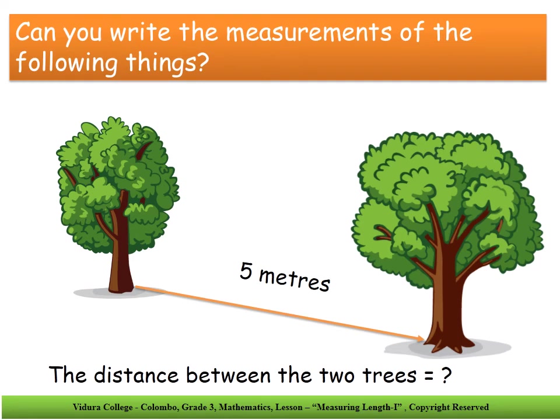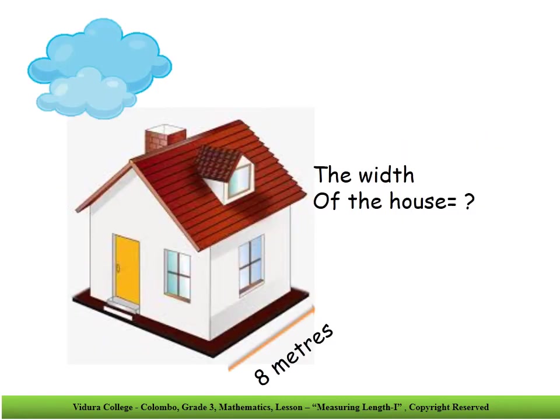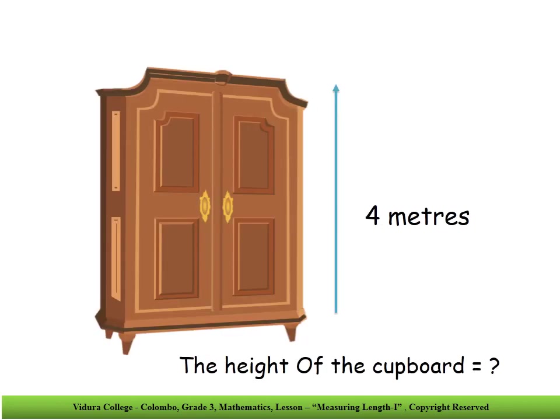Can you write the measurements of the following things? There are two trees — find the distance between them. The distance between the two trees is 5 meters. Now find the width of the house. The width of the house is 8 meters. Can you write the height of this cupboard? The height of the cupboard is 4 meters.